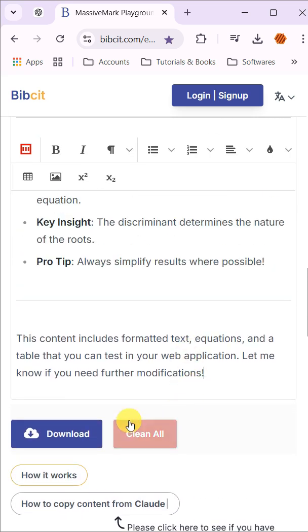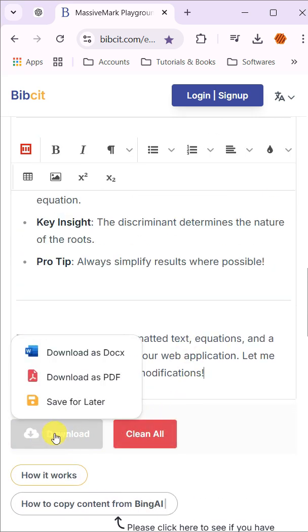To save this as a Word document, look for the download options in the tool. Select Download as Doc to export the content into a Word file.